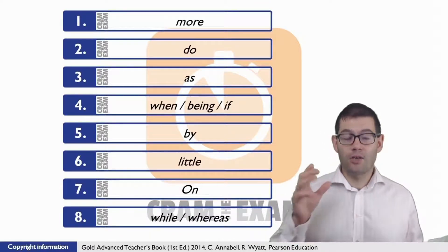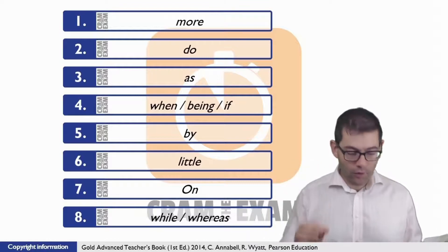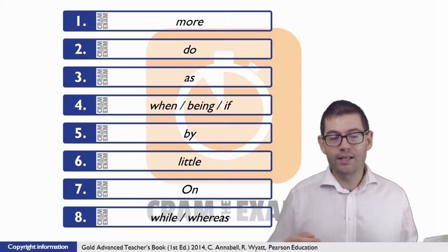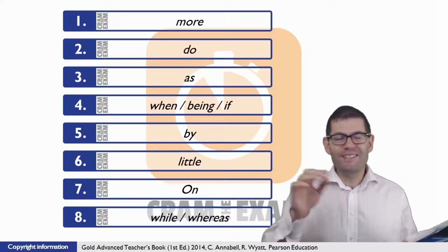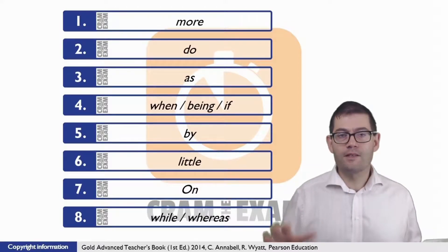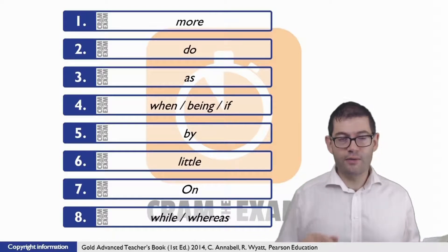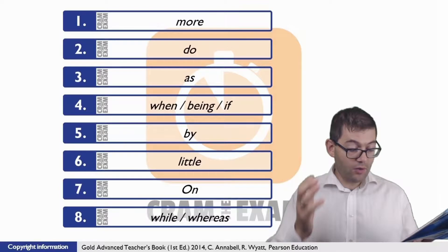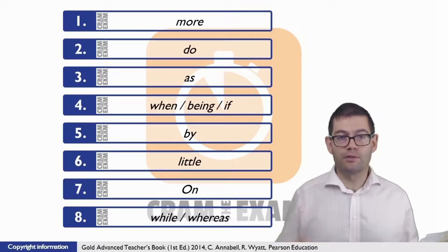For question number six, what we need here is the correct quantifier that collocates with the word that follows - differences - given the context. And of course the context tells us that there isn't many differences at all, so the correct quantifier that we need here is 'little'. Interestingly, the recorded images showed very little difference between dot dot dot.